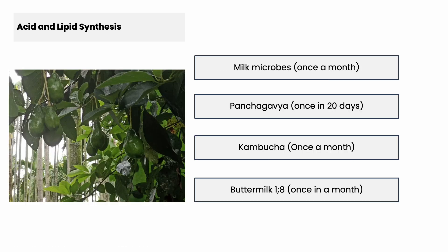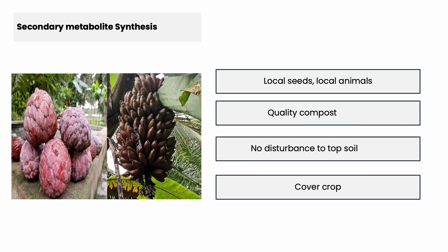Third is acid-lipid synthesis — it happens through milk microbes, panchagavia, kombucha, and buttermilk. This stage is very important. A lot of our hybrids and GMOs are losing nutritional quality. This nutrition can only be attained through local seeds and local animals, combined with quality composting. We do not disturb the topsoil — we lose zinc and calcium when we do. Only the soft, growing tips of roots absorb calcium. So we do not disturb the topsoil and we work with the carbon system.